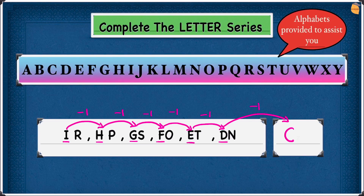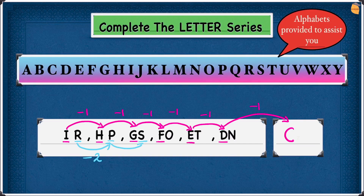Now we're going to look at the second letter: R to P. R is here and P is here — 1, 2 — we're going minus 2 now. Write minus 2. So P to S this time. P is here and S is here — 1, 2, 3 — we're going 3 forwards. So it's going to be plus 3. Write plus 3.